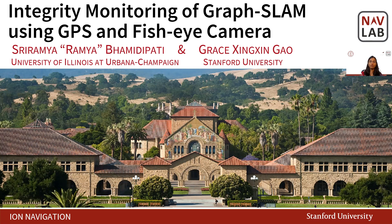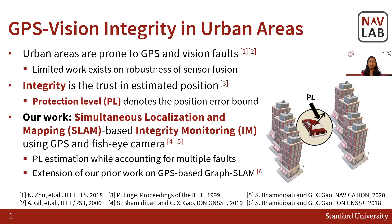Hello, welcome to the three-minute review of our navigation paper on Integrity Monitoring of GraphSLAM using GPS and fisheye camera. In urban areas, localization using GPS and vision is susceptible to measurement faults. In the context of robust localization, integrity denotes the measure of trust in the estimated position. We develop a simultaneous localization and mapping based Integrity Monitoring algorithm using GPS and fisheye camera to estimate the protection levels while accounting for multiple faults.